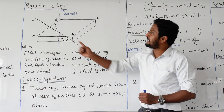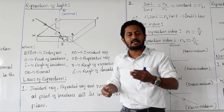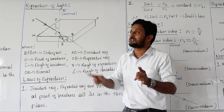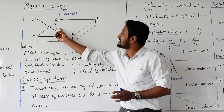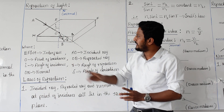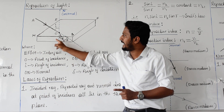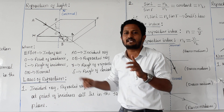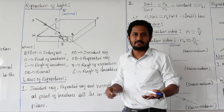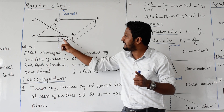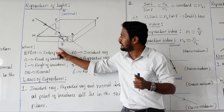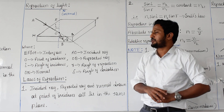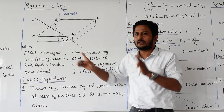The angle between the incident light ray and the normal is called the angle of incidence. We must measure this angle with respect to the normal ray. The angle between the refracted light ray OB and the normal is called the angle of refraction, represented as R.